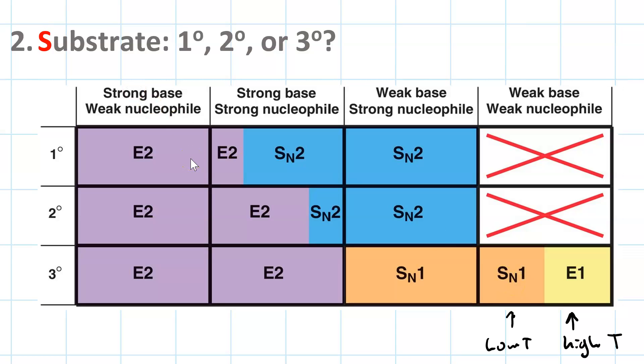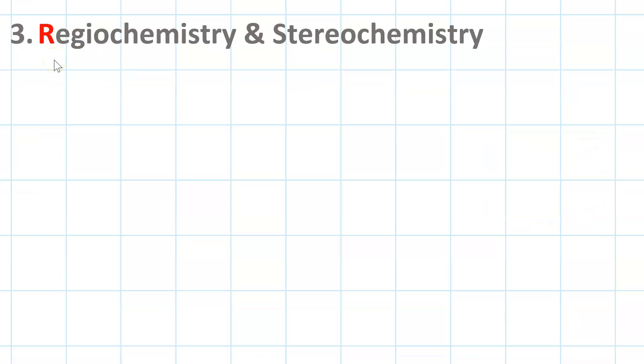This table looks like a lot to remember, but go systematically and remember your mechanisms. Once you've determined what mechanism will be followed, then you can evaluate the regiochemical and stereochemical outcome. Regiochemical means which constitutional isomer are you going to get, Zaitsev or Hoffman in this case. Stereochemistry means which stereoisomer are you going to get: cis trans, E Z, R S.